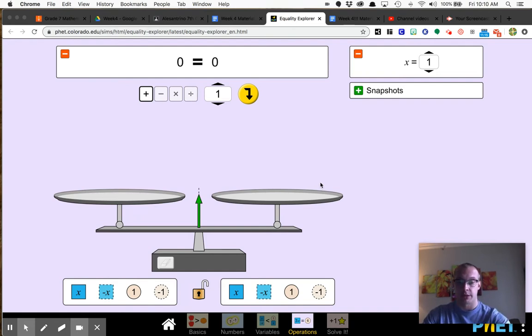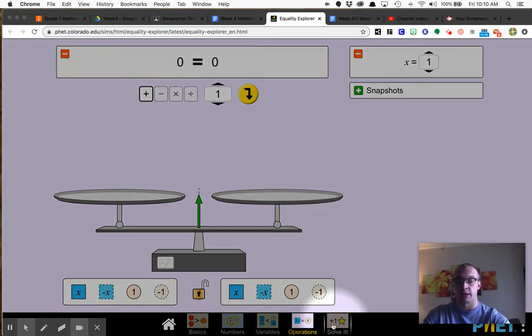The bonus or challenge 1 is with this solve it box here. So if you go back to your Google Doc and read those instructions, this solve it box is the challenge, but this is activity 3 right here.